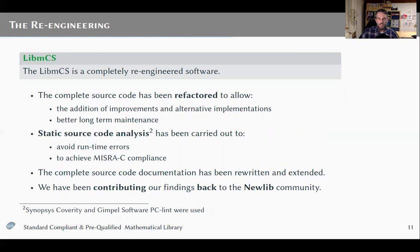The LIB-MCS is a completely re-engineered piece of software. We refactored the complete library to allow the addition of improvements and alternative algorithm implementations, and to ensure better long-term maintenance. We also did static source code analysis to avoid runtime errors and to achieve MISRA compliance, using the tools Coverity and PC-lint. On the source code side, we did a complete rewrite of all the documentation and extended it. Finally, we contributed all the changes back to the newlib community.